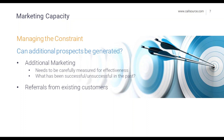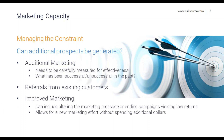Another way to gain additional prospects — one of the more effective methods — is referrals from your existing customers. It doesn't hurt to ask a happy customer if they know anyone else who could benefit from your service. The last way to manage the constraint is improved marketing: altering a marketing message to elicit a stronger response, allowing new marketing effort without spending additional money. Improved marketing can also include ending campaigns yielding low returns so the money can be reallocated to new campaigns, keeping overall marketing cost in check. I'll now pass it to Nicole for a real-world example.